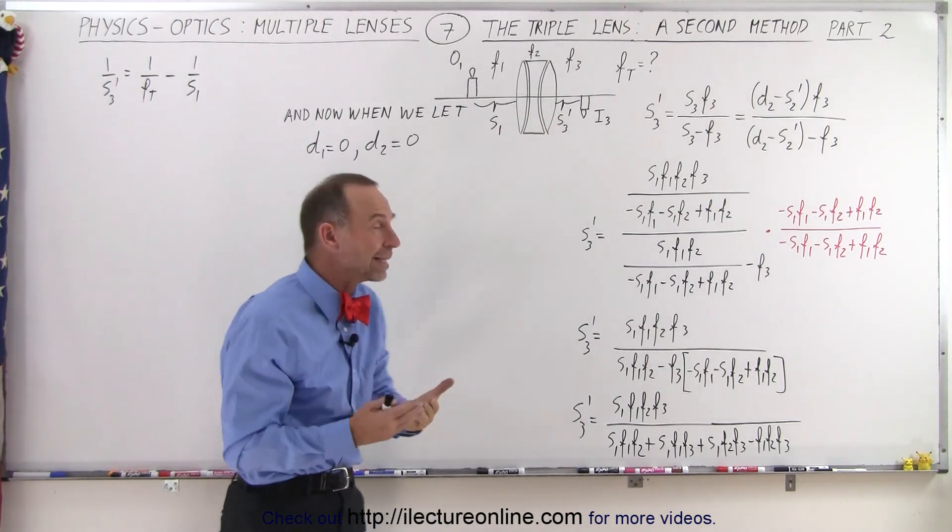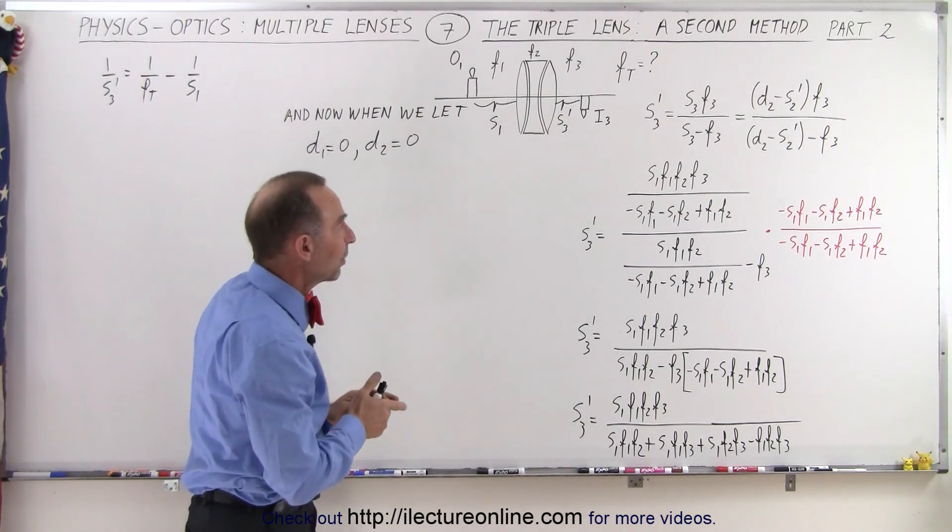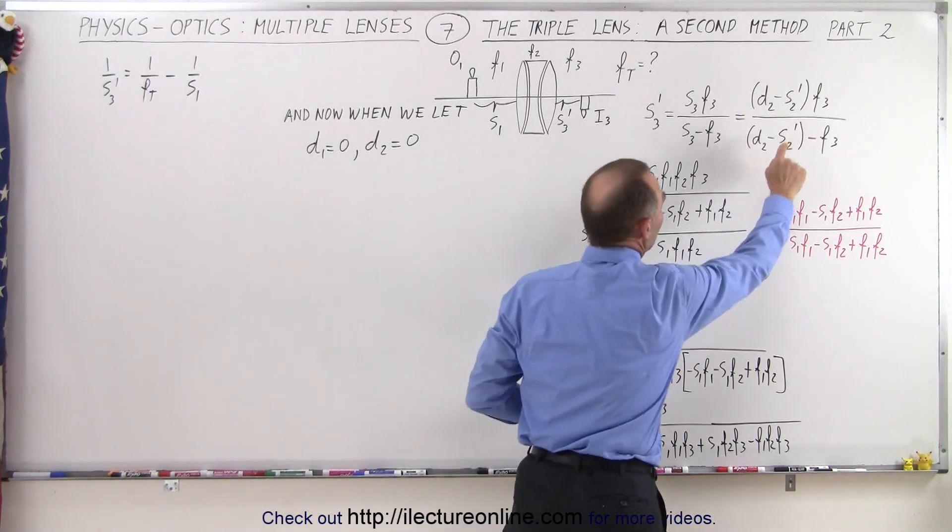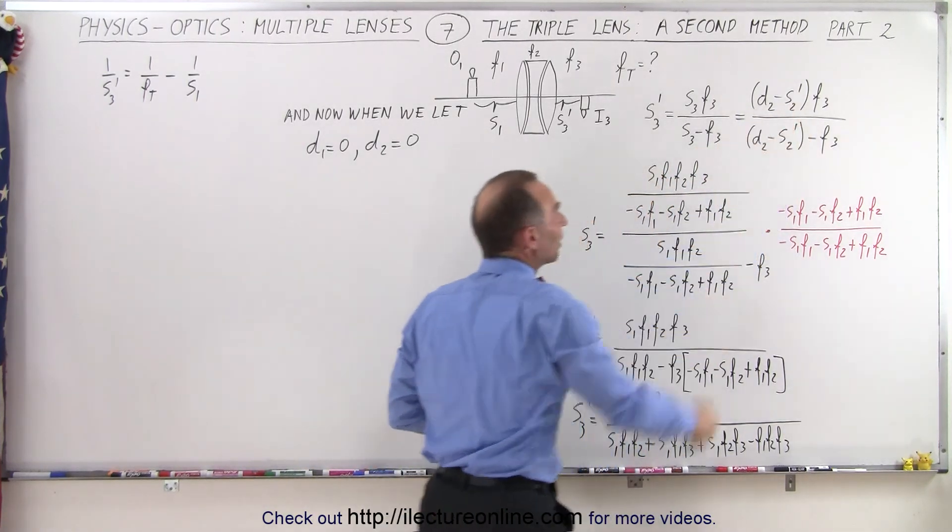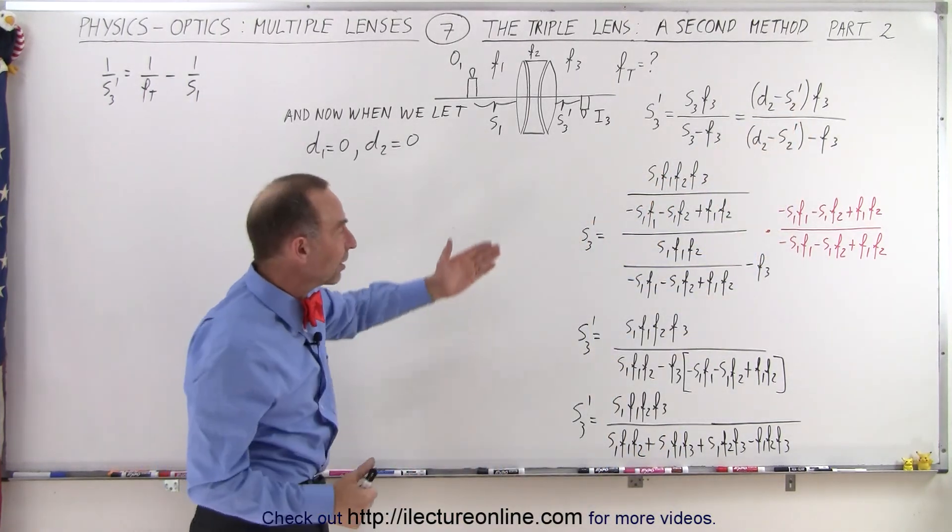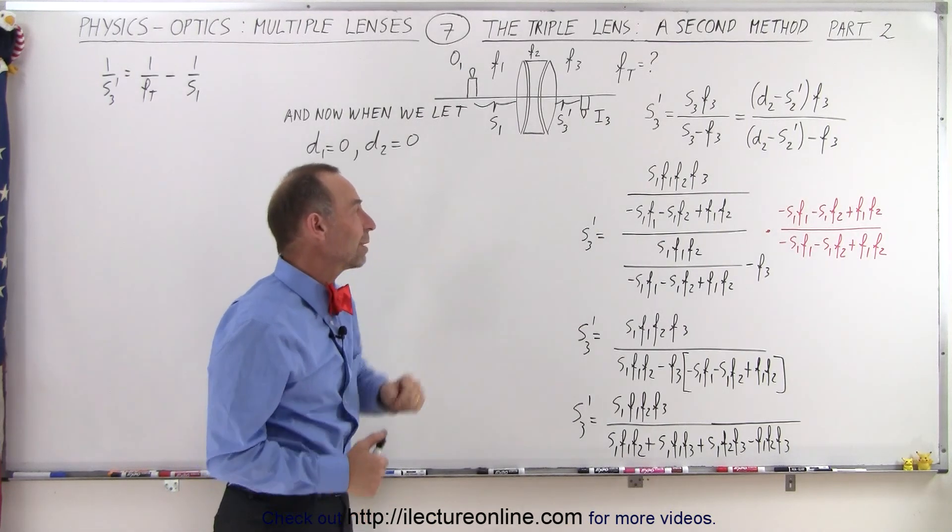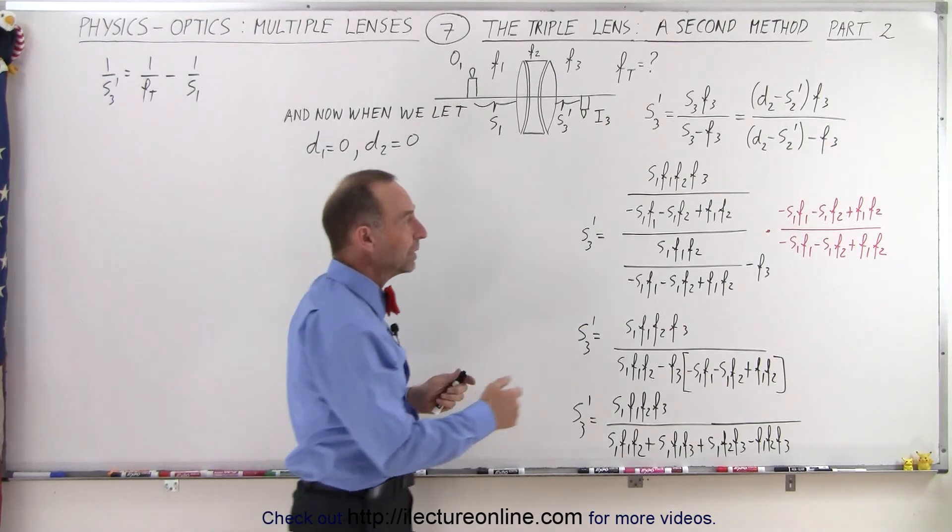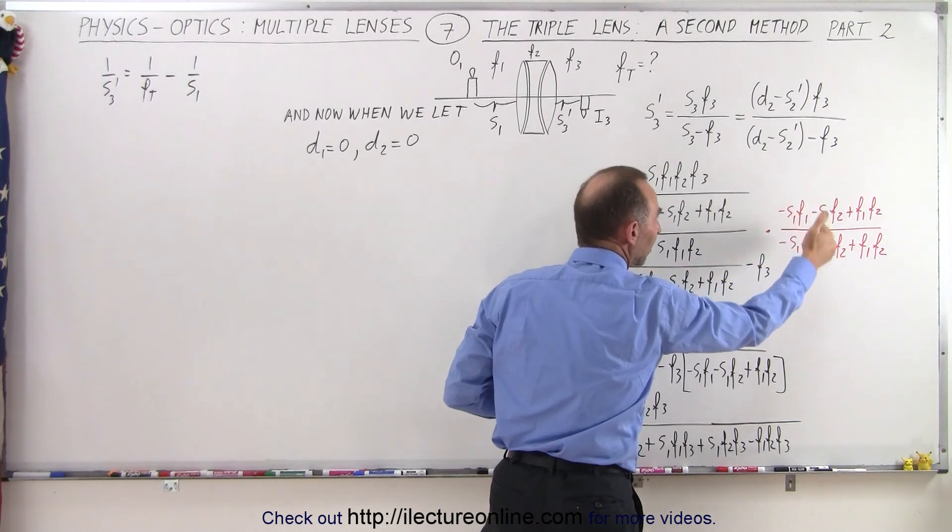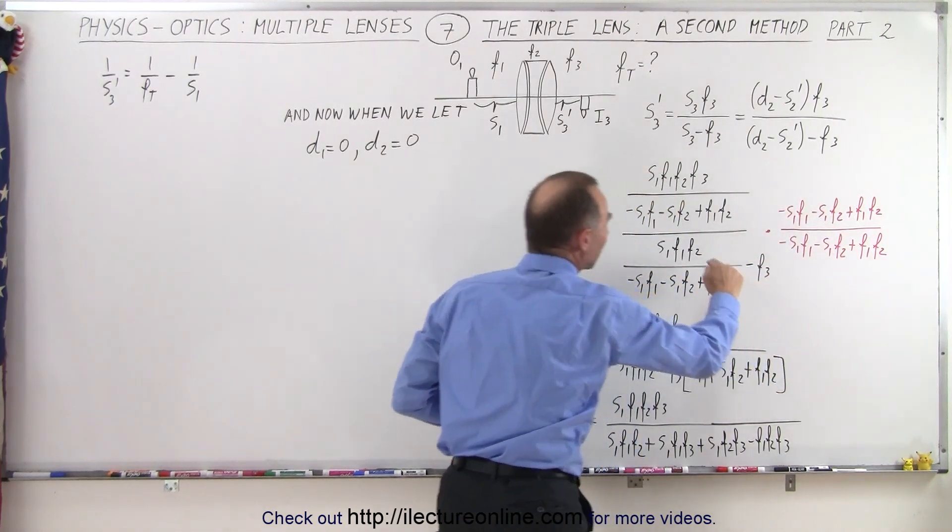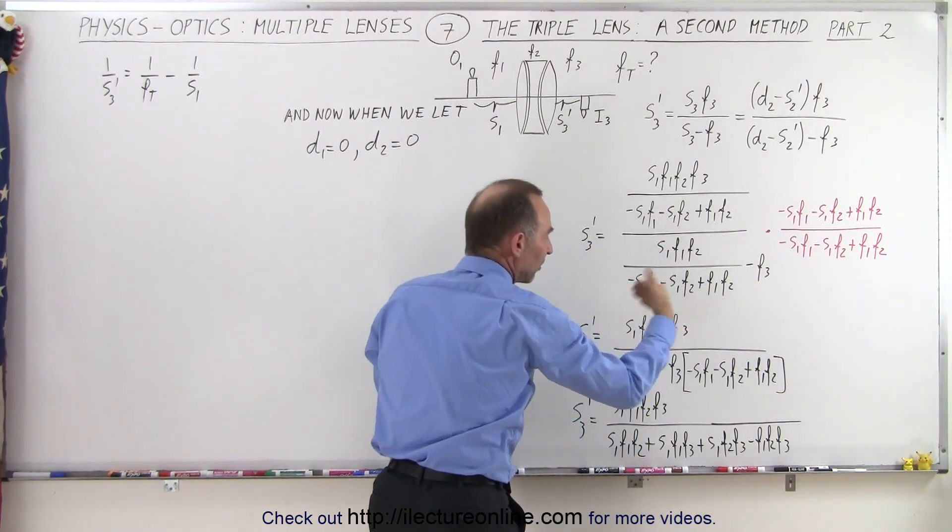We should be able to find, going through each lens separately and finding the proper equivalent for s2 prime like we did in the previous video, we eventually end up with this equation for s3 prime. Notice we then multiply both the numerator and the denominator by this quantity right here to get rid of these denominators and simplify the equation a little bit more.